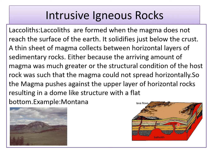Laccoliths are formed when the magma does not reach the surface of the earth and solidifies below the crust. A thin sheet of magma collects between horizontal layers of sedimentary rocks. Either because the arriving amount of magma was much greater, or the structural condition of the host rock was such that the magma could not spread horizontally. So the magma pushes against the upper layer of horizontal rocks, resulting in a dome-like structure with a flat bottom. An example is the Montana Laccolith in the United States, which has been exposed on the earth's surface.